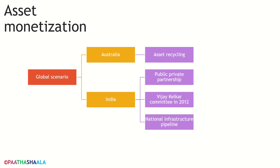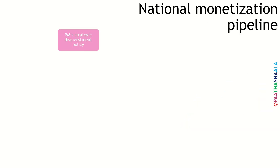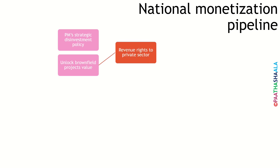The government has already launched the national infrastructure pipeline with 6,835 projects in December 2019, and the project pipeline has been increased to 7,400. This national monetization pipeline is in line with the Prime Minister's strategic disinvestment policy, under which the government will retain presence in only a few identified areas with the remaining areas to be given to the private sector. By this project, the government is able to unlock the value of brownfield projects by involving the private sector and transferring revenue rights to them.